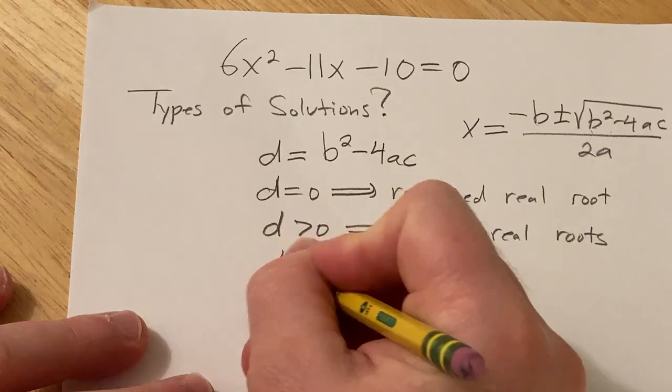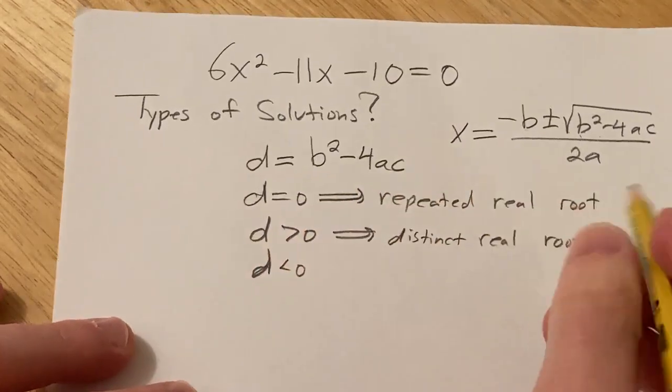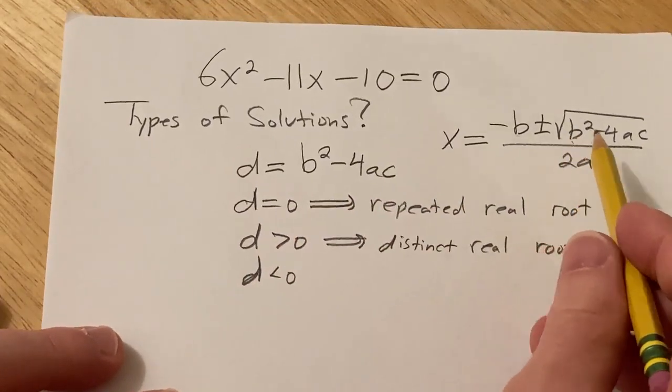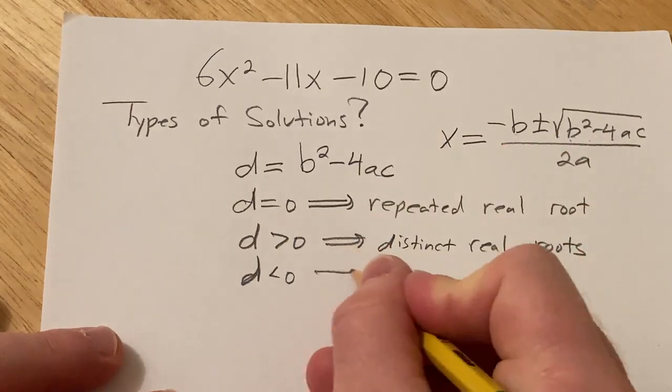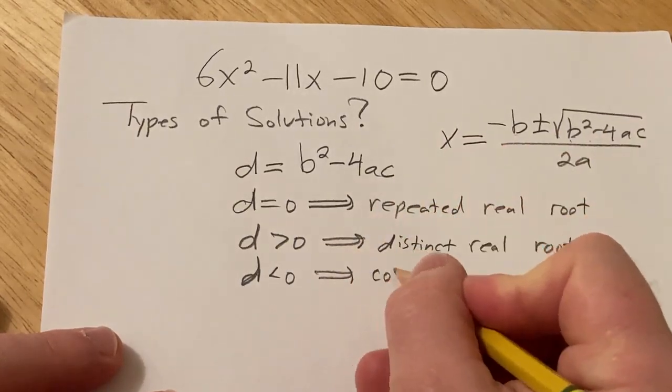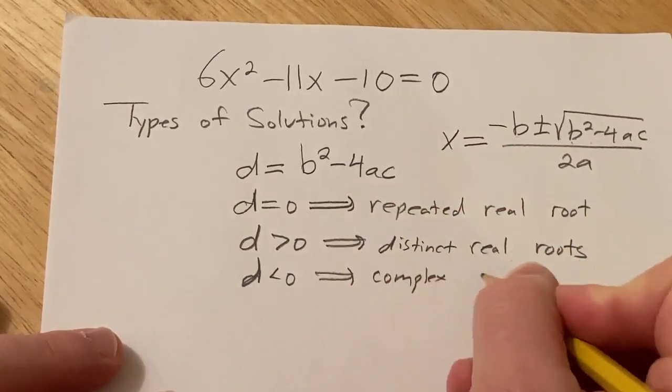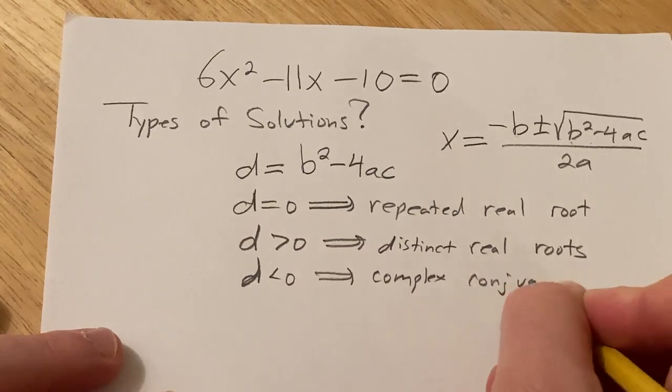And if d is less than 0 then you're going to get a negative in the square root. You're going to get an i. So in this case you'll have complex conjugates as roots.